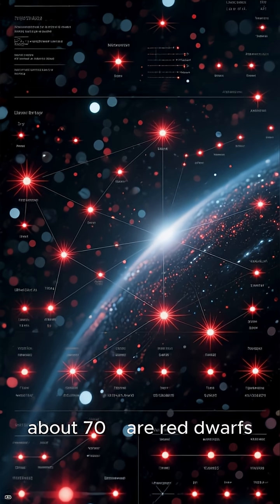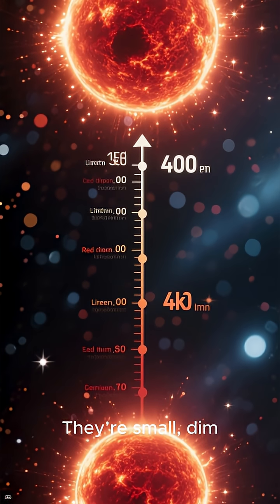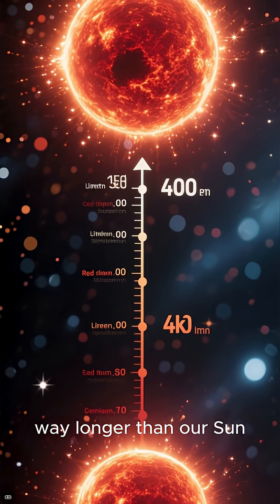Most stars in our galaxy, about 70%, are red dwarfs. They're small, dim, and live hundreds of billions of years, way longer than our sun.